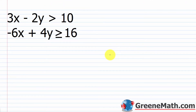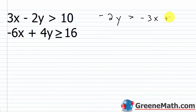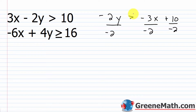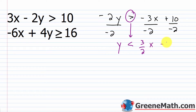For the next example, we have 3x minus 2y is greater than 10, and negative 6x plus 4y is greater than or equal to 16. Solving the first for y: subtract 3x from each side to get negative 2y is less than negative 3x plus 10, then divide by negative 2 — remember, dividing by a negative flips the inequality symbol — giving y is less than three-halves x minus 5.